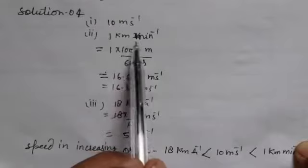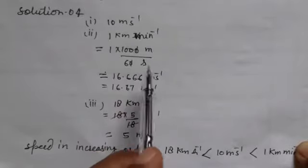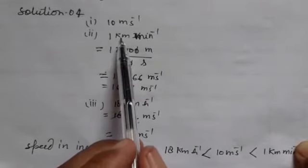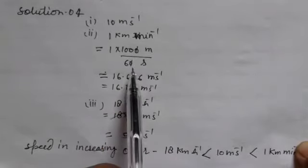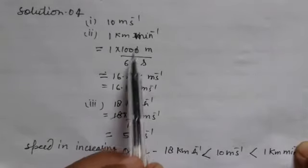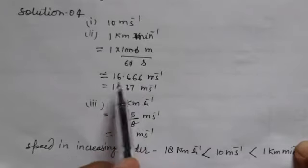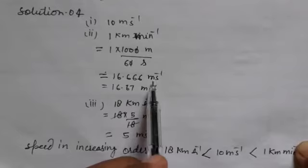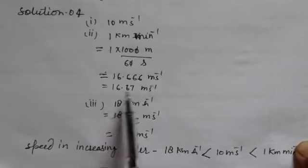The second speed is 1 kilometer per minute. We change it to meter per second: 1 kilometer is equal to 1000 meters and 1 minute is equal to 60 seconds. After solving, this is 16.66 meters per second.